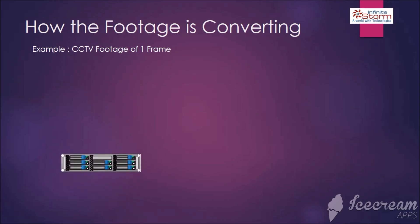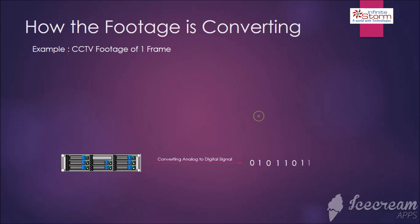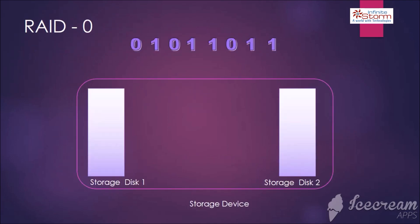Here is an example: your footage is converted from analog video signal to digital video signal by using a video recorder. In computer language, 1 byte is equal to 8 bits. We are not going to talk deeply about storage calculation, as our team is working to publish a next video with real-time examples. 2 bytes is equal to 8 bits of data, which we are going to show how it is stored into RAID 0 level.